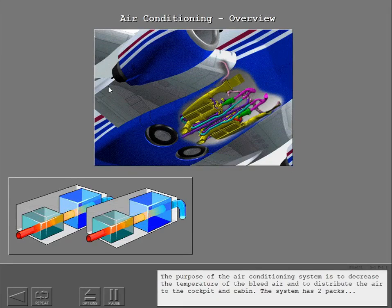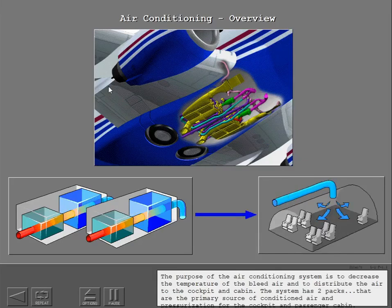The purpose of the air conditioning system is to decrease the temperature of the bleed air and to distribute the air to the cockpit and cabin.